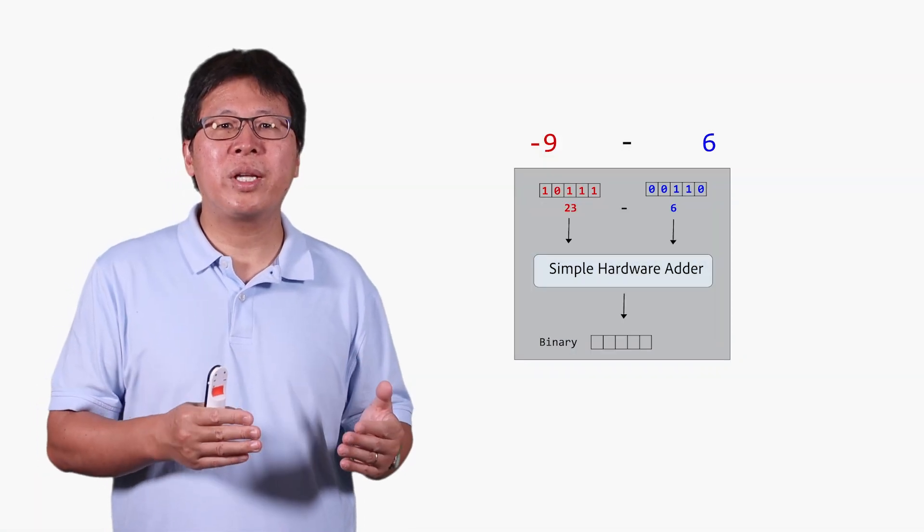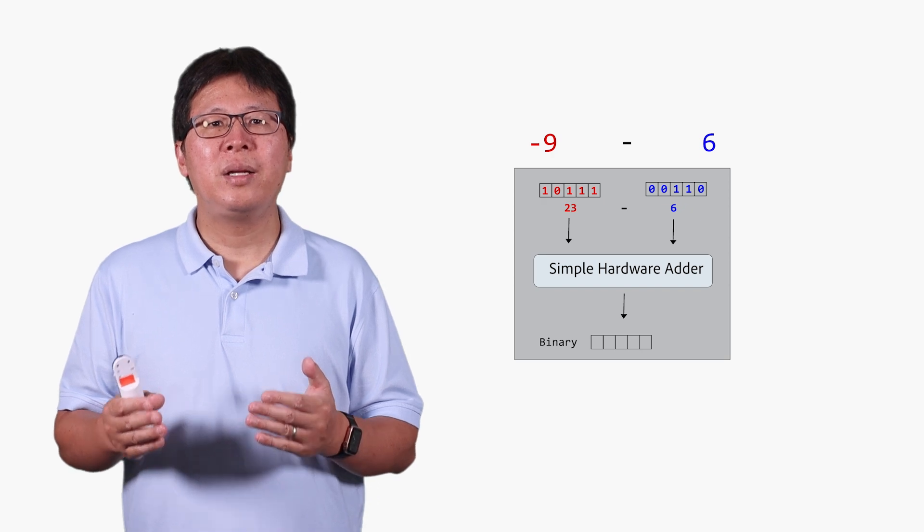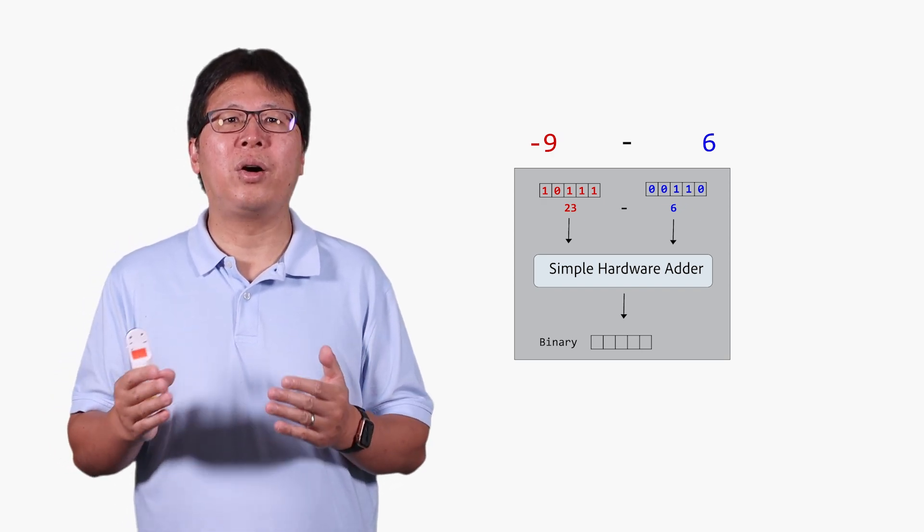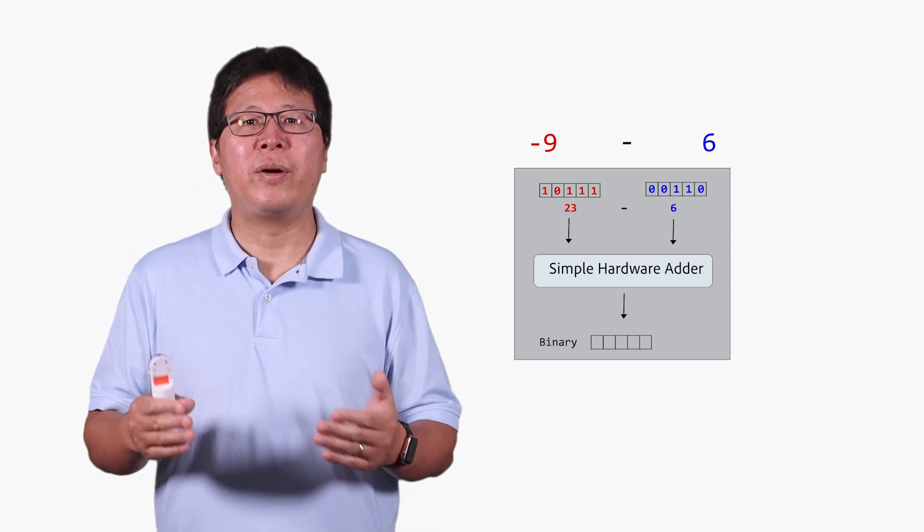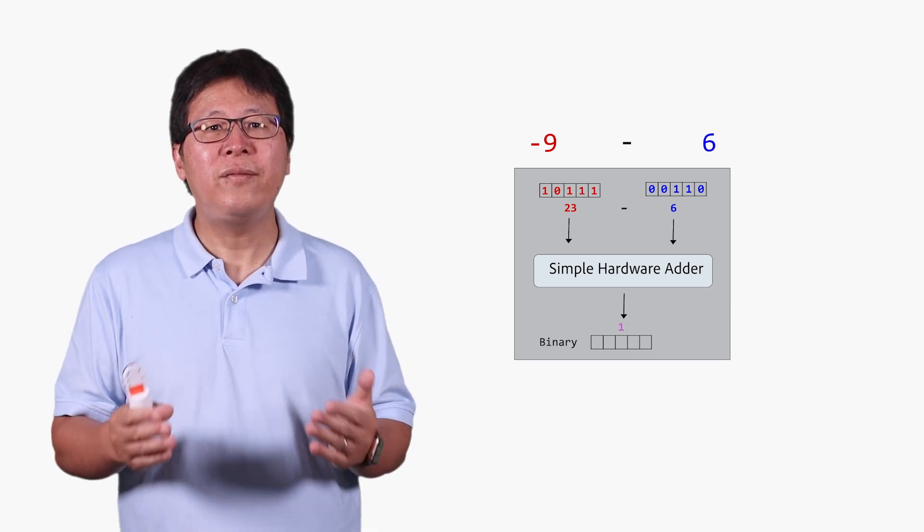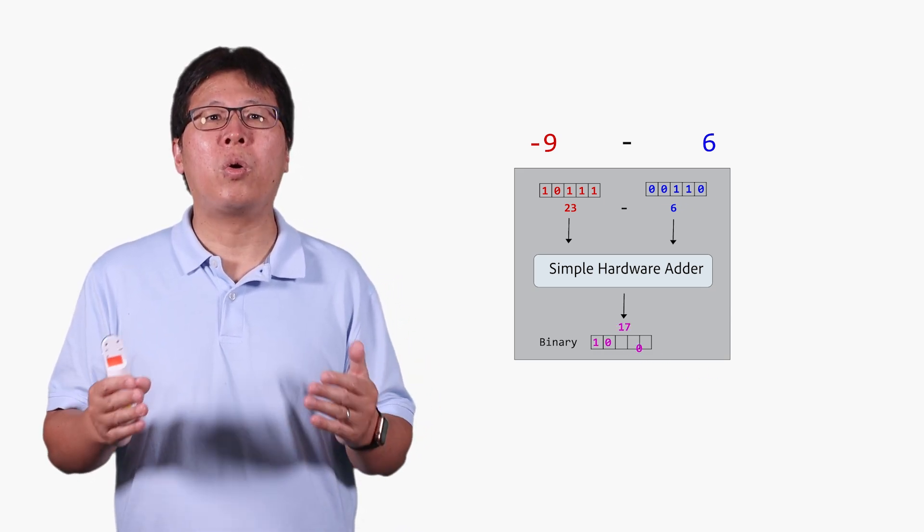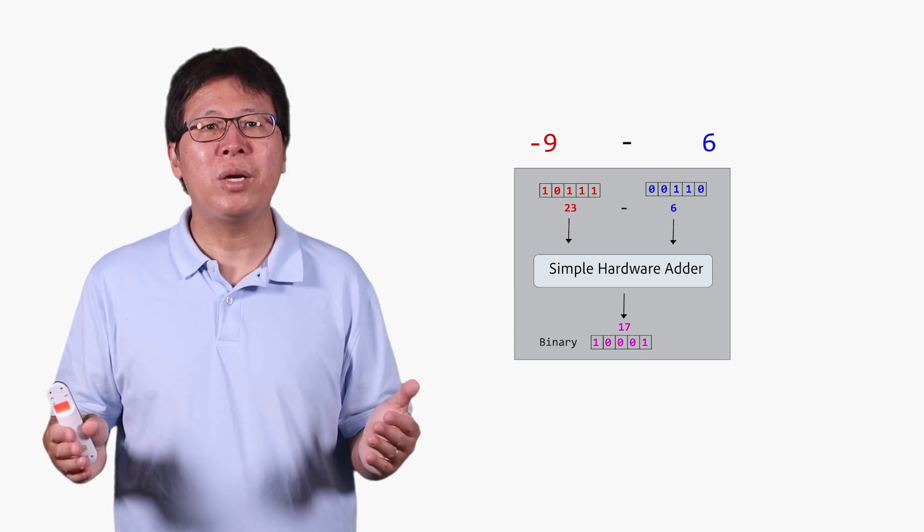This example subtracts 6 from negative 9. The hardware ignores the sign of the input and subtracts 6 from 23 and the result is 17 in decimal or 10001 in binary.